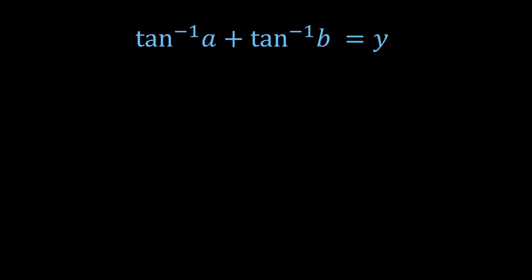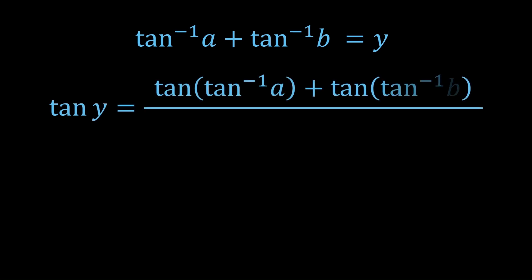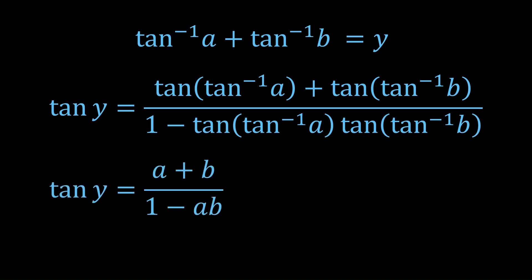Notice that we're going to have to use the angle sum formula for tan. So that would be tan of the first plus tan of the second divided by 1 minus the product. And this would just simplify to a plus b on 1 minus ab.